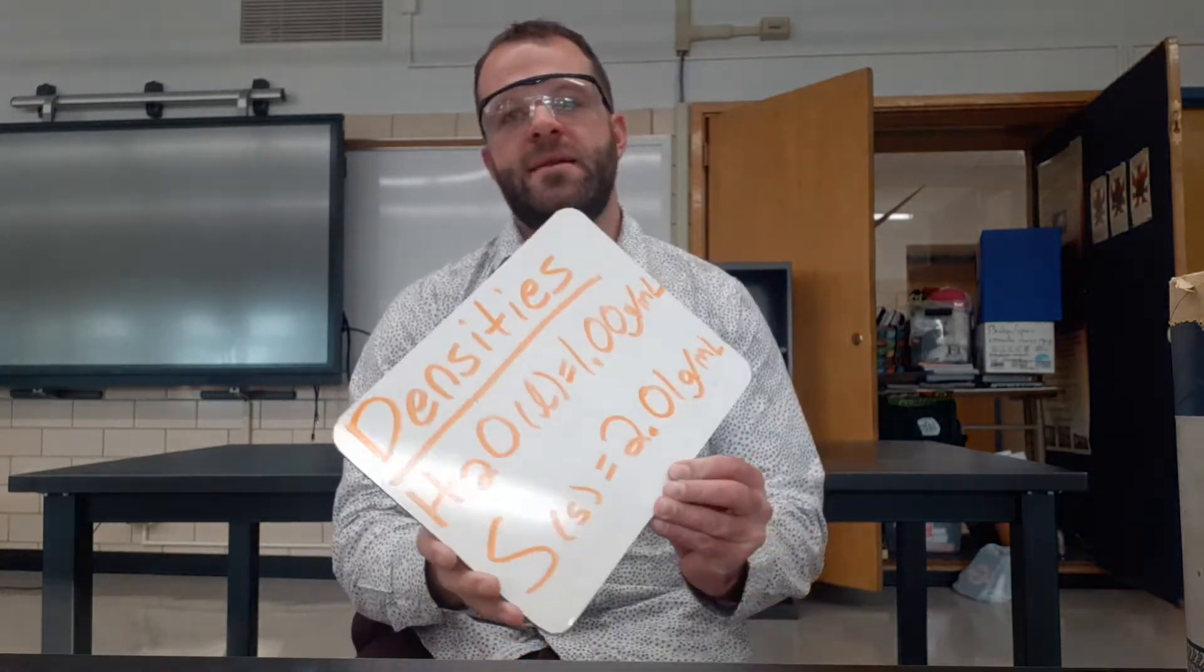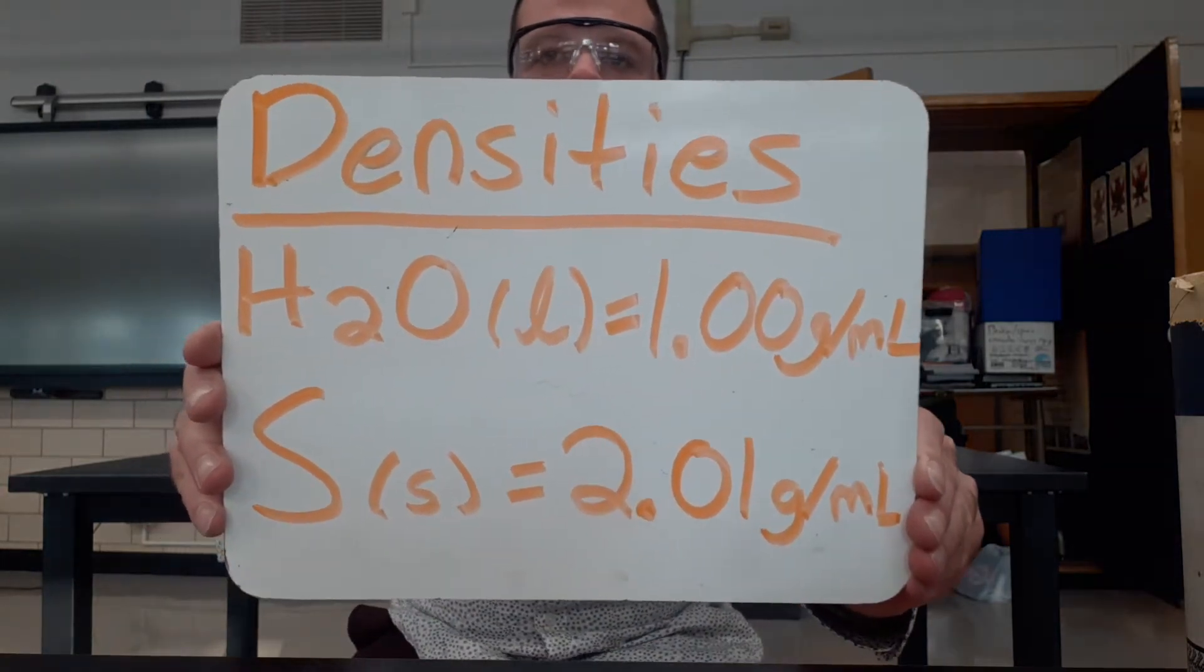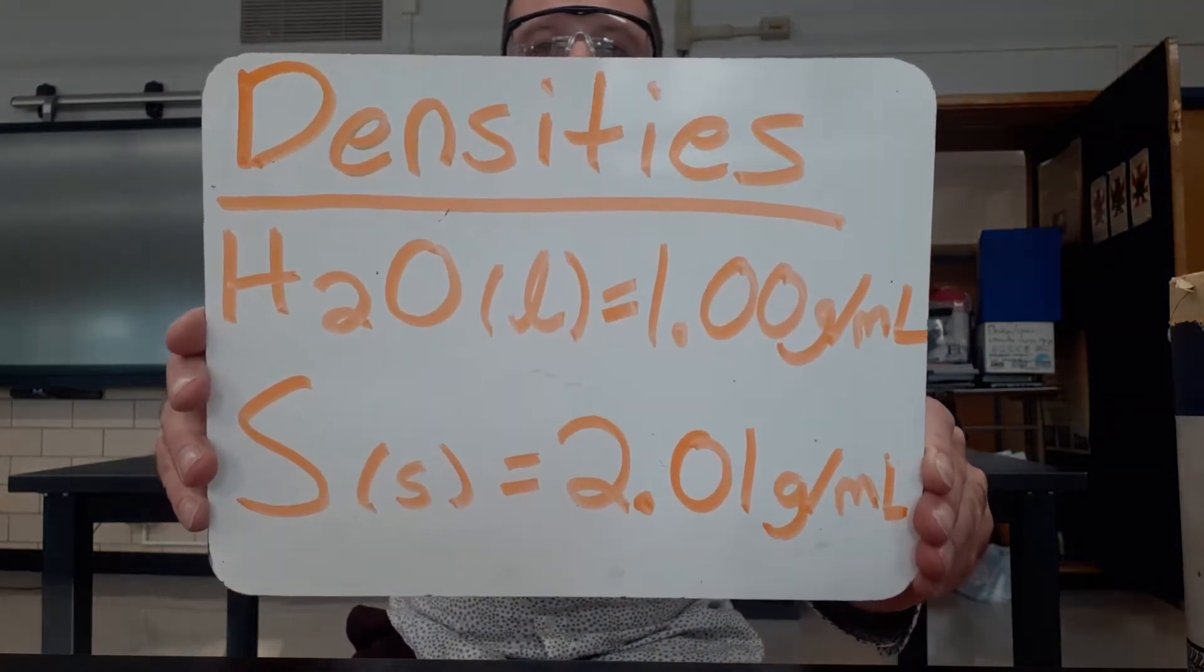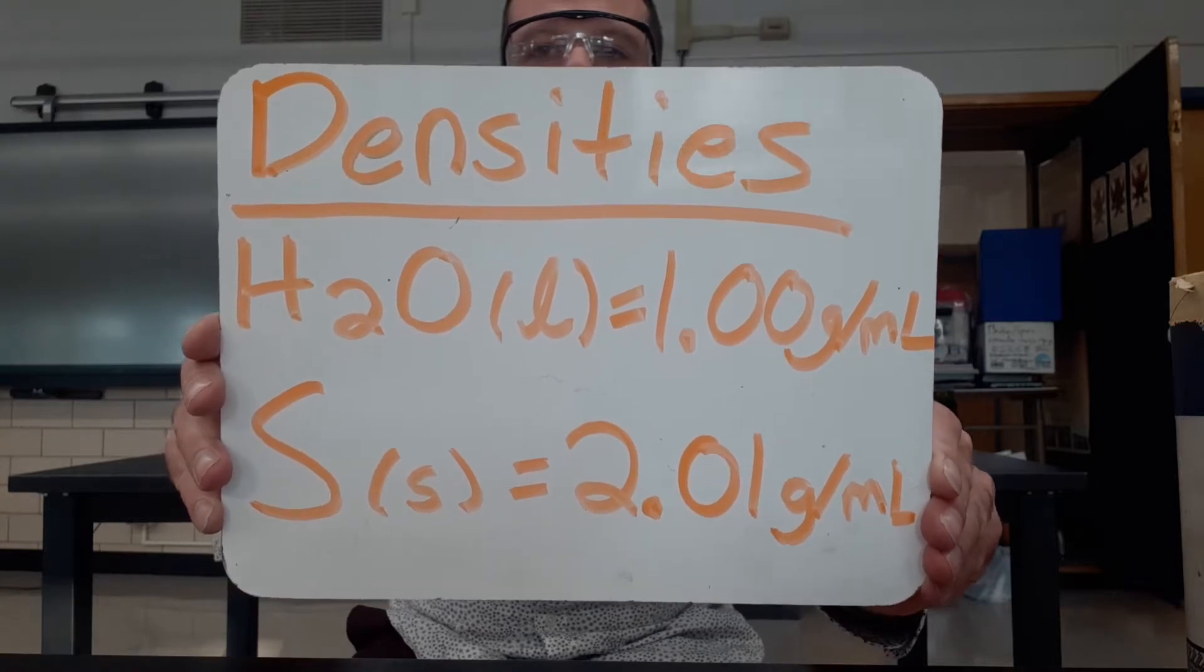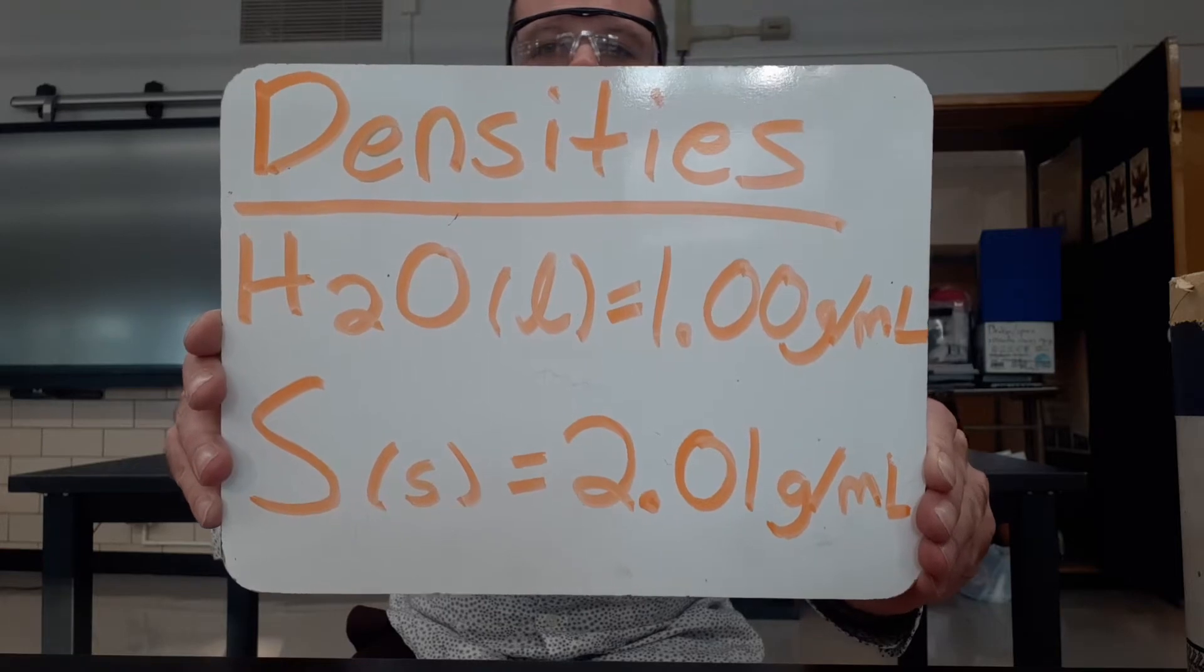Now a couple things I want to show you before we actually do the little demonstration is the densities of both sulfur and water. The density of water is about 1.00 grams per milliliter and the density of sulfur is 2.01 grams per milliliter.